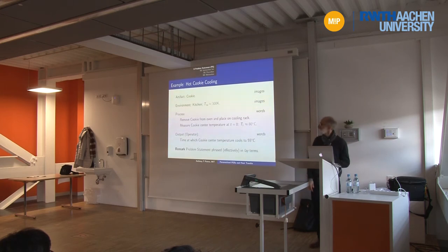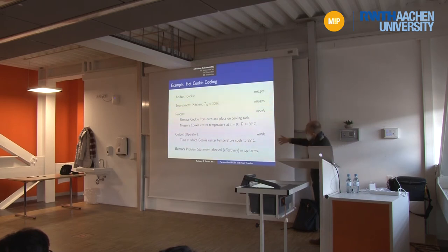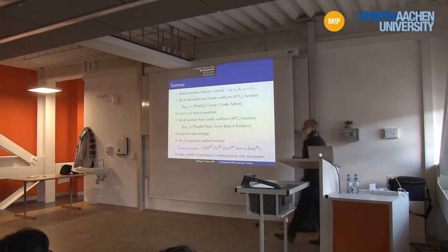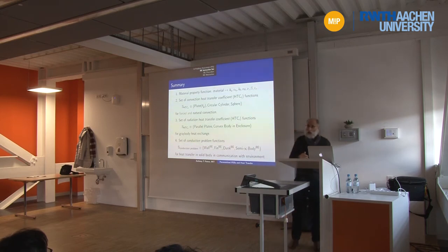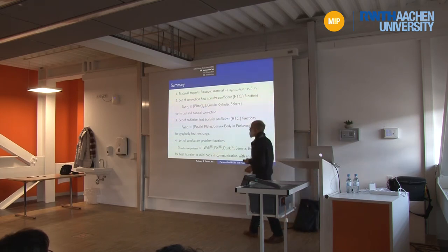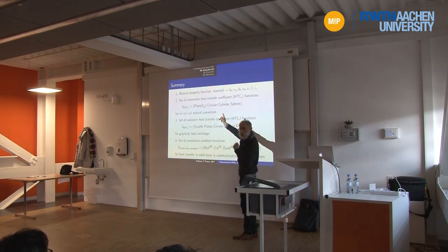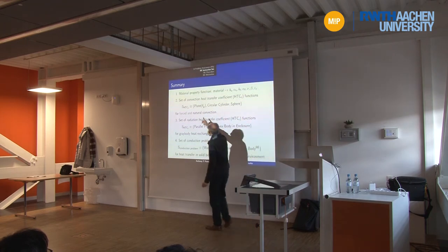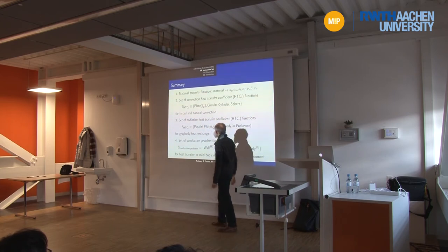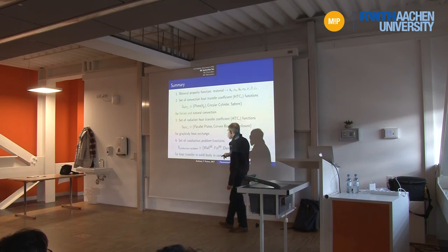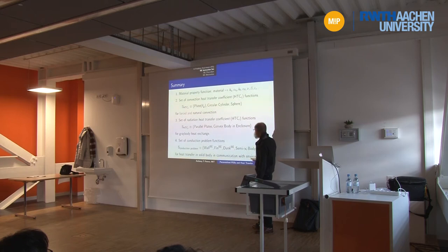For example: the cookie is the artifact, the kitchen is the environment, the process is removing the cookie and letting it cool, and the output operator is the time at which it cools to 55°C. The instruction set for back-of-the-envelope heat transfer consists of: a function returning material properties for any given material (essentially the internet); a set of convection heat transfer coefficient functions that given Rayleigh and Prandtl return Nusselt numbers; radiation heat transfer coefficient functions; and conduction problem functions for a solid body communicating with the environment—our wall, fin, dunk, and semi-infinite body.